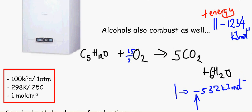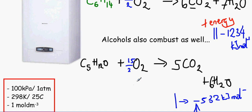We would mostly like to carry out reactions under standard conditions so that we can compare one reaction with the next. Standard conditions are 100 kilopascals or one atmosphere, 298 Kelvin or 25 degrees Celsius, and one mole per decimeter cubed concentration. In the exam, if asked to state standard conditions, that is one mark — please state all three. The easiest ones to remember are one atmosphere, 25 degrees Celsius, and one mole per decimeter cubed.